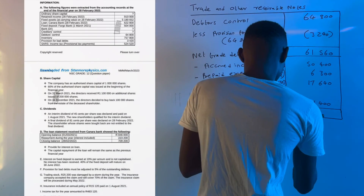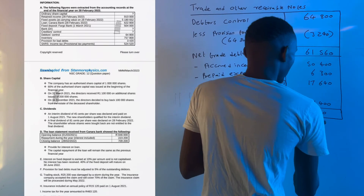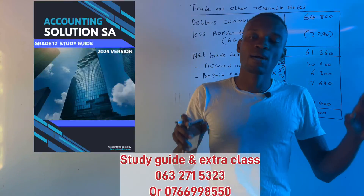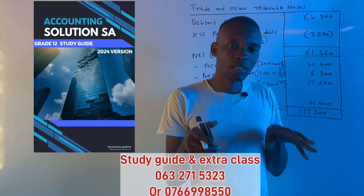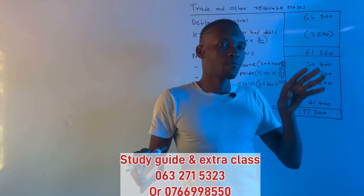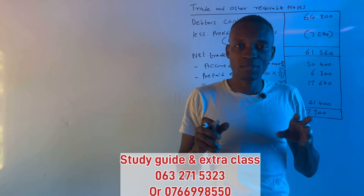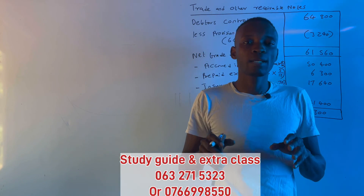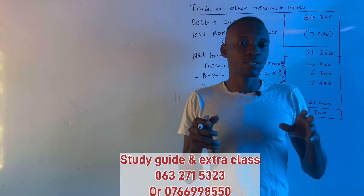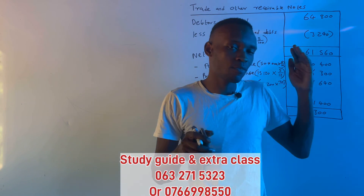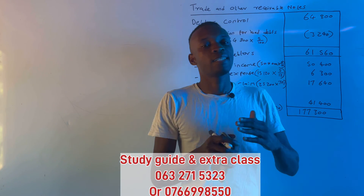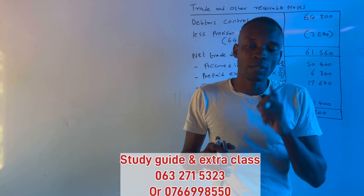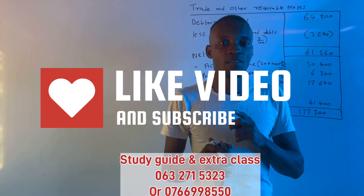After adding all the items together, we get a total of R177,300 for trade and other receivables. That's how it's done, Grade 12. Please get our study guide which includes questions from different provinces — from Limpopo to Western Cape — along with memorandums to practice. We also have online extra classes every Friday and Saturday. Please subscribe so you get notified when new videos are uploaded.